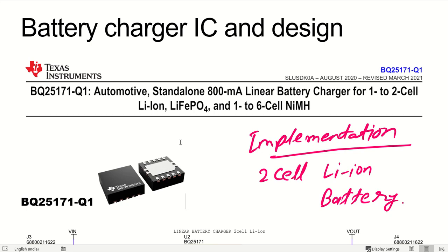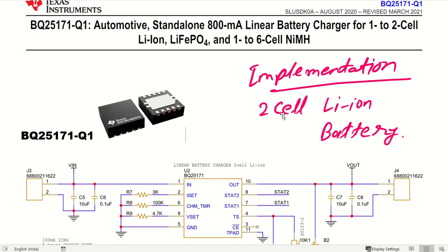Namaskar my dear friends. We have already seen this particular battery charger IC, its design and detail process. This is an automotive standalone 800 mAh linear battery charger IC for one or two cells of lithium ion batteries or lithium ferrum phosphate batteries, or one to six cells of nickel metal hydride batteries. In this session, we will try to design or implement one of the applications with two cell lithium ion battery.